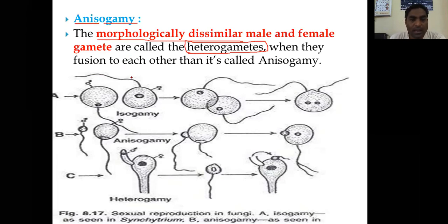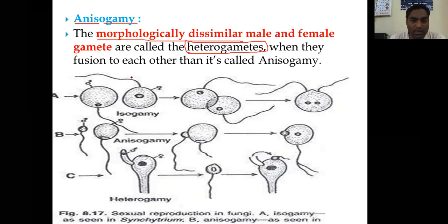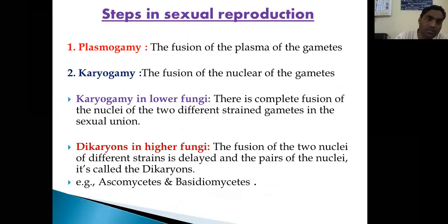The third type is heterogamy, also called oogamy. In oogamy, the female gamete is non-motile or passive, while the male gamete is motile. The male gamete moves toward the female gamete for fertilization. That process is called heterogamy or oogamy. So these are the three various types of gamete fusion.